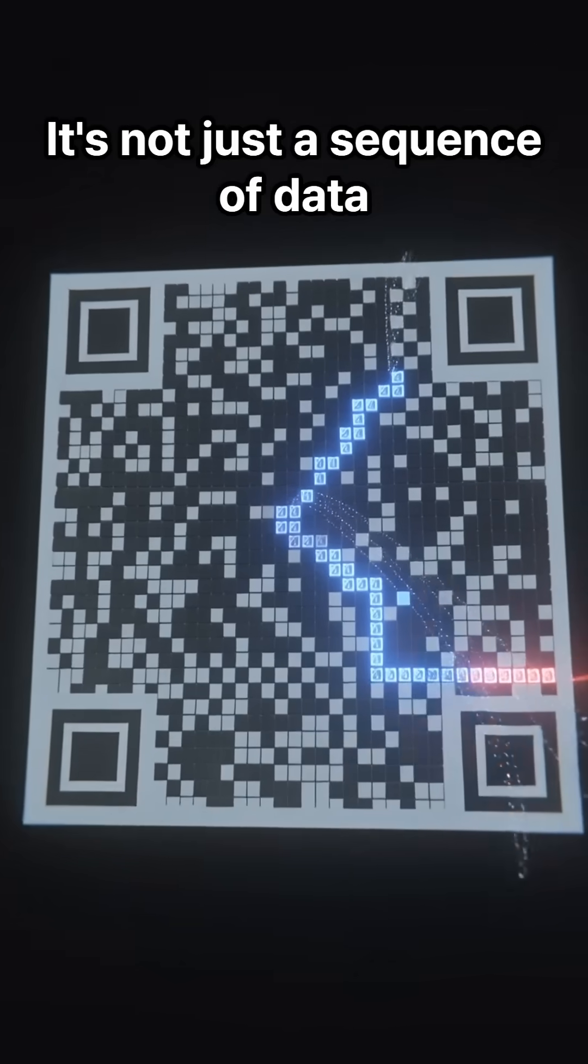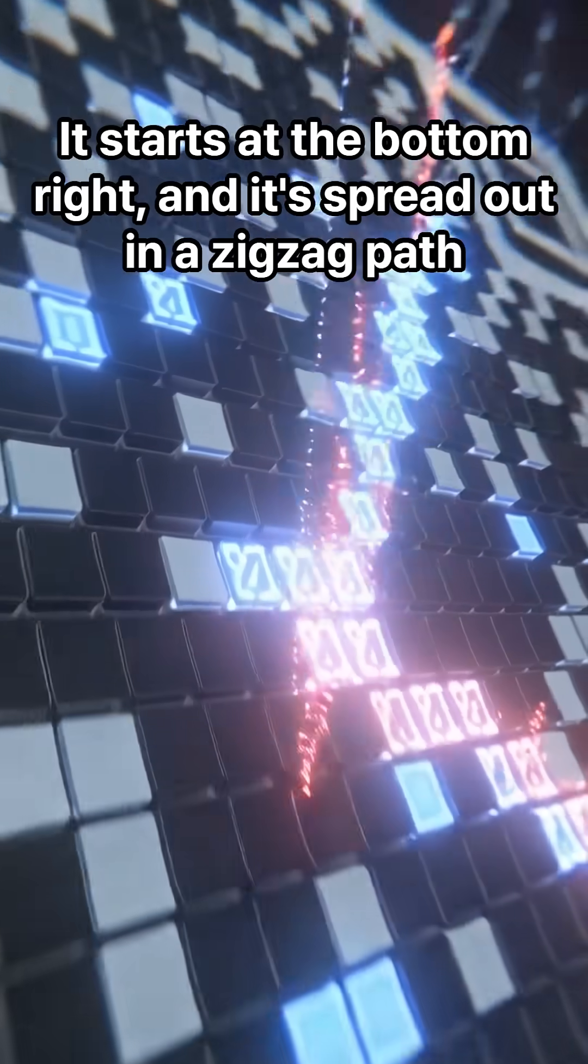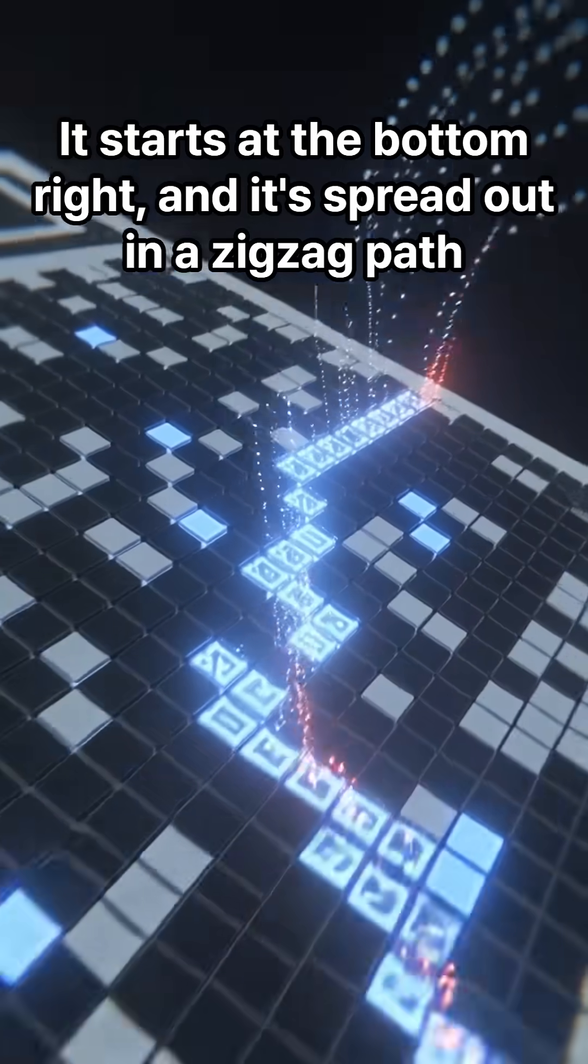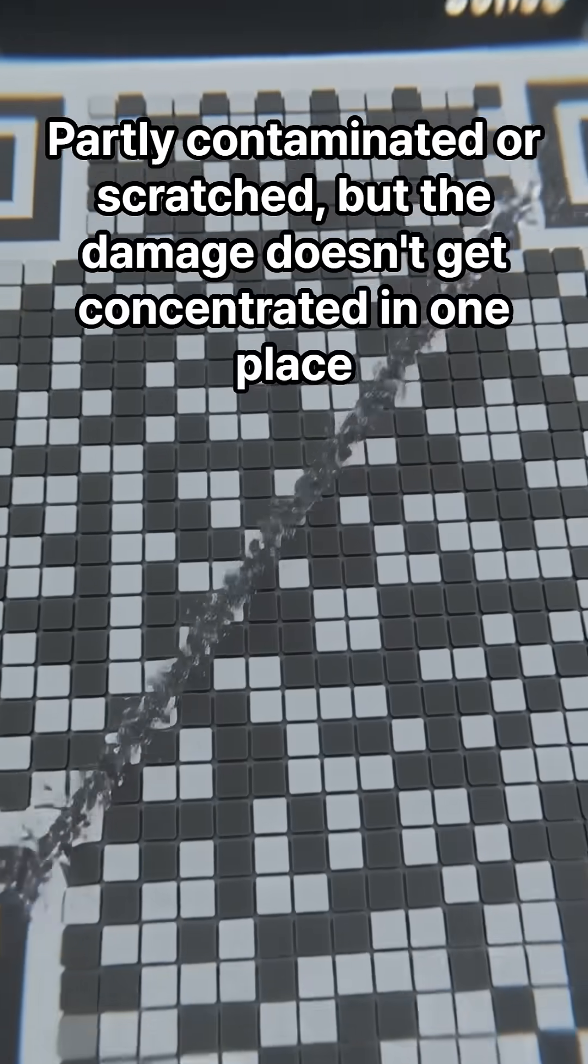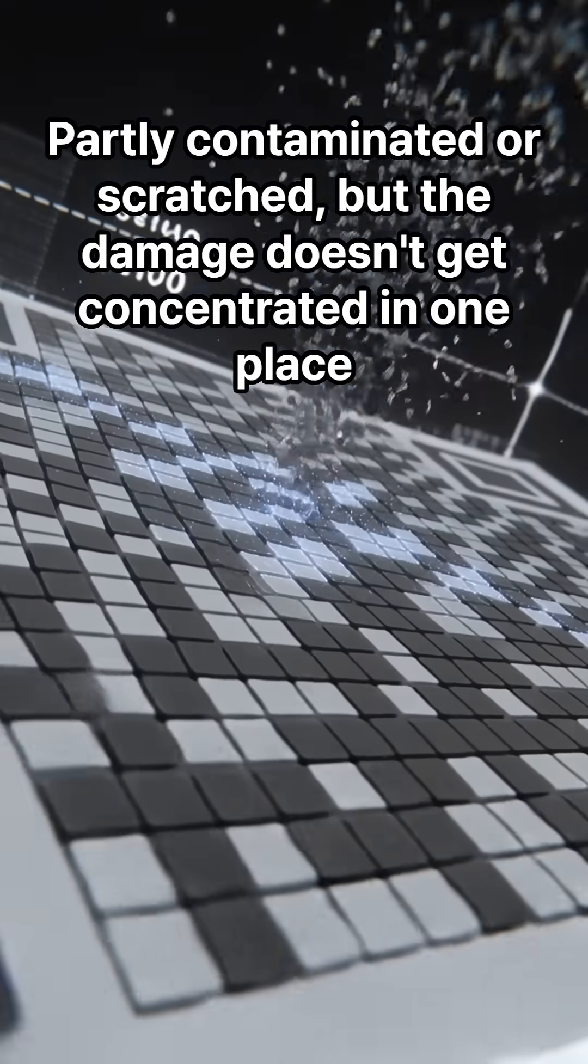Now, the real data in the QR code is read. It's not just a sequence of data. It starts at the bottom right, and it's spread out in a zigzag path. It needs to be scattered like this so that if it's partly contaminated or scratched, the damage doesn't get concentrated in one place.